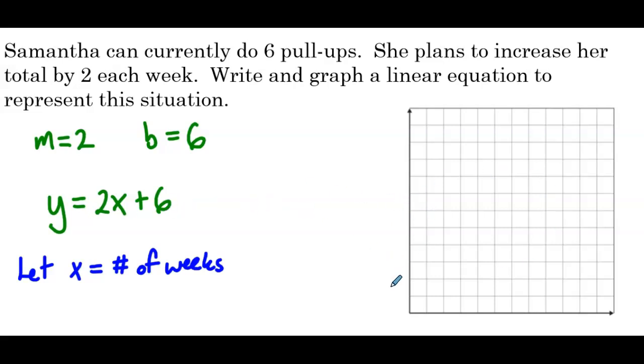So now we can graph this. So we have a y-intercept of 6: 1, 2, 3, 4, 5, 6. And a slope of 2. Now what you notice is we really didn't fit much on this graph. So I'm actually going to erase it and start over. Sometimes with these word problems, the numbers don't just fall from 1 to 10. So what happens when we have values that are larger? We have to scale our axes so that we can fit more on. So in this case, I'm going to scale the y-axis by 2.